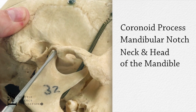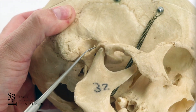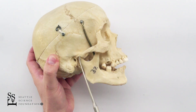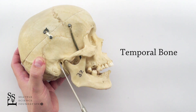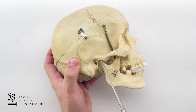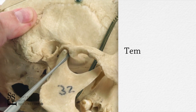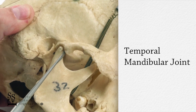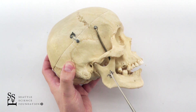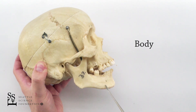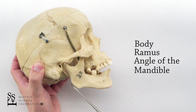You'll notice the head of the mandible articulates with the inferior surface of the temporal bone, and this articulation forms your temporomandibular joint. As we move back down to the mandible, we'll see the body, the ramus, and the angle of the mandible.